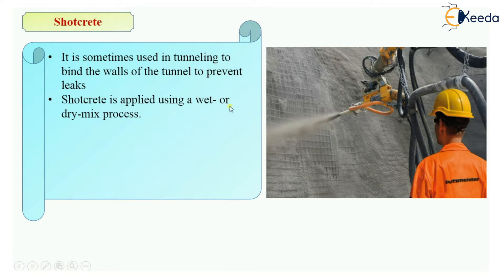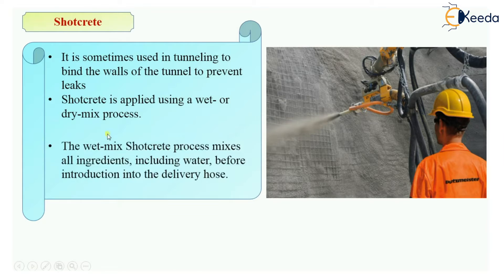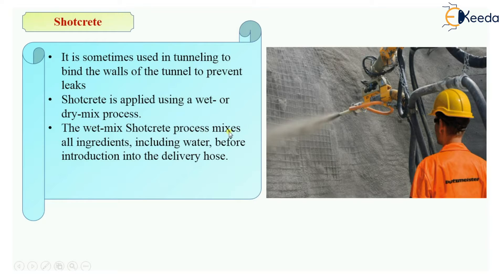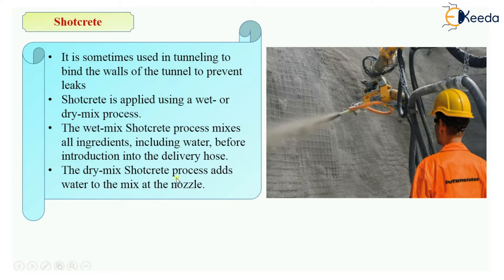Shotcrete is applied using either a wet mix process or a dry mix process. In the wet mix shotcrete process, all ingredients — aggregates, cement, and water — are mixed first before being put into the delivery hose pipe. In the dry mix shotcrete process, water is added at the nozzle portion: the dry mix is inserted into the pipe and water is added at the nozzle at the end.